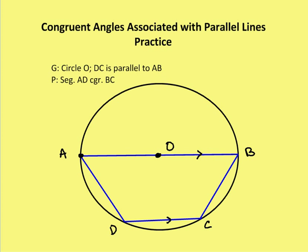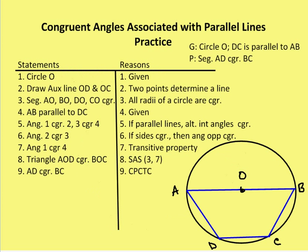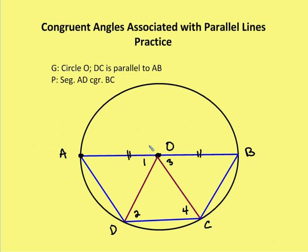The first thing we want to do is play with the diagram and mark it up. Before we do that, let's consider drawing an auxiliary line — actually two auxiliary lines — one from D to O and the other from O to C. Then I'm going to recognize that AB is a diameter as part of the diagram.